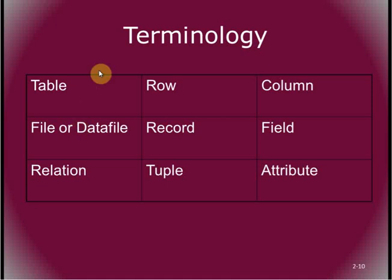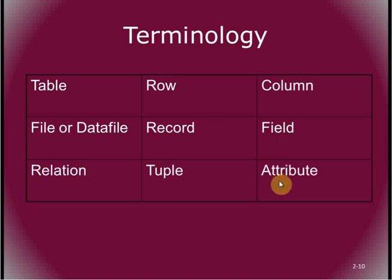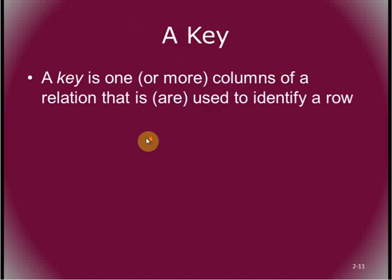Here's some terminology. Another word for table might be file or relation. Another word for row is record, or the term tuple. Another word for column, when working with databases, is field or attribute. These are all just different ways of referring to the same concepts depending on context — spreadsheet, table, or database.